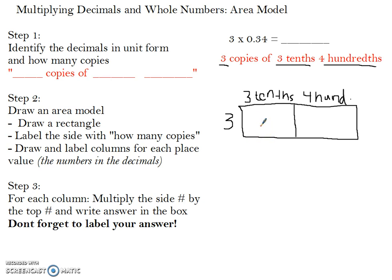Step 3 is that for each column, you want to multiply the side number, 3, by the number at the top. So for my first box, I'm going to multiply 3 times 3, which equals 9. And you don't want to forget to label your answer. I'm going to abbreviate with a T since I don't have room. Next, I'll move to the next box, which will be 3 from the side, times 4 from the top, which will equal 12. And don't forget to label, because it's not 12, it's actually 12 hundredths. And I'm going to label with an H.